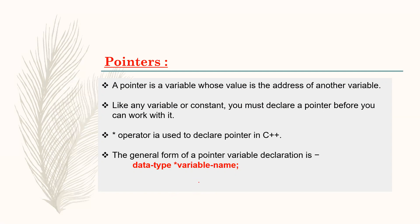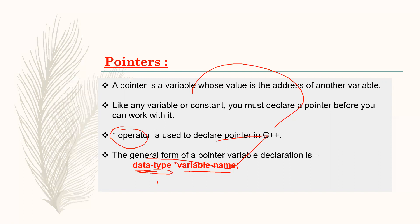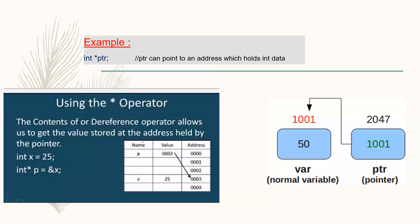Next is pointers. A pointer is a variable which holds the memory address of another variable — it stores the memory address of another variable. The star operator is used to declare pointers in C++. The general form for pointer variable declaration is: data type, then star variable name. You use the data type for that variable and use the star operator. For example, data type int and star ptr.